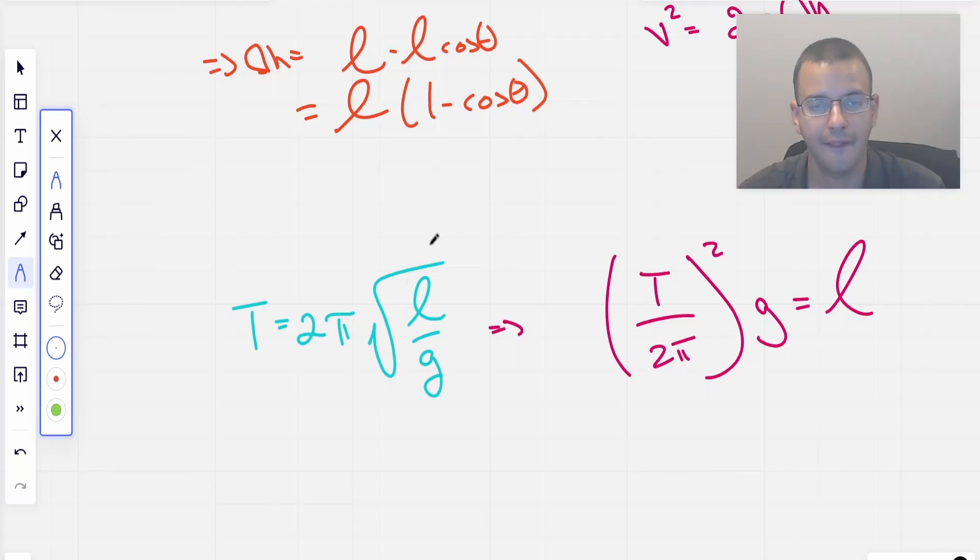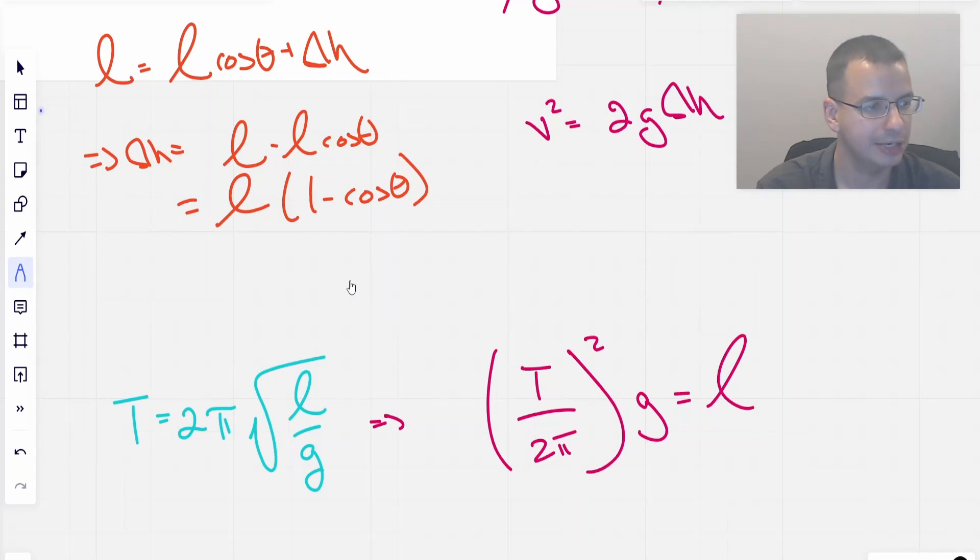So period over 2 pi squared times G equals L. I know that was a lot of math really fast. I think it's correct. I'm like 80% confident.